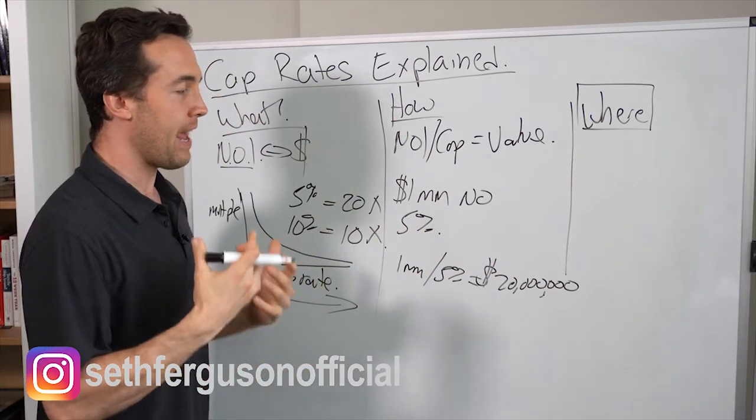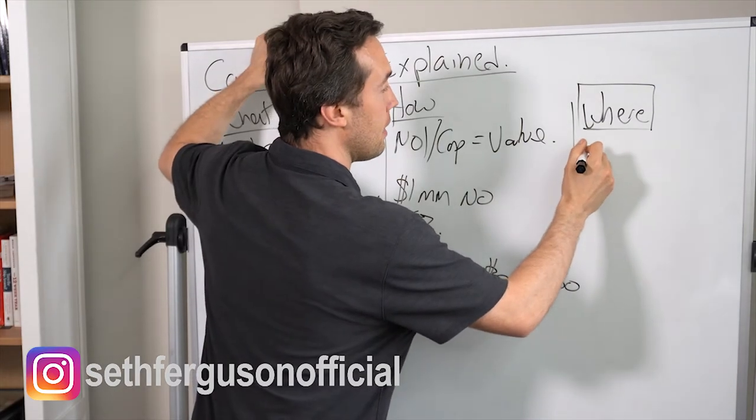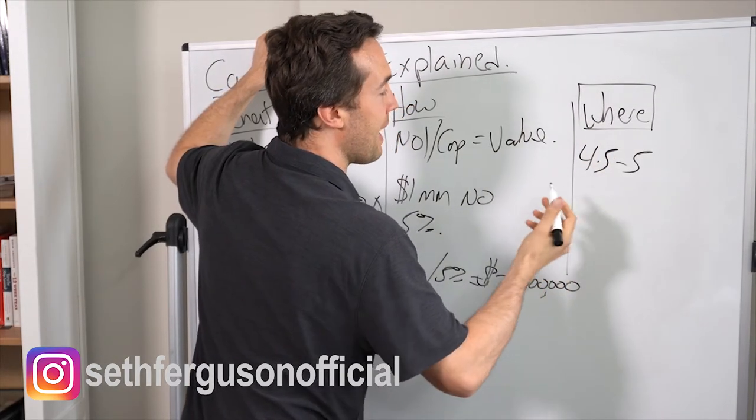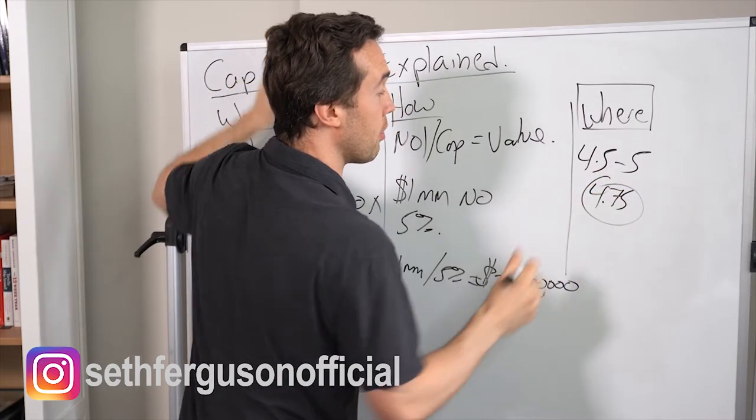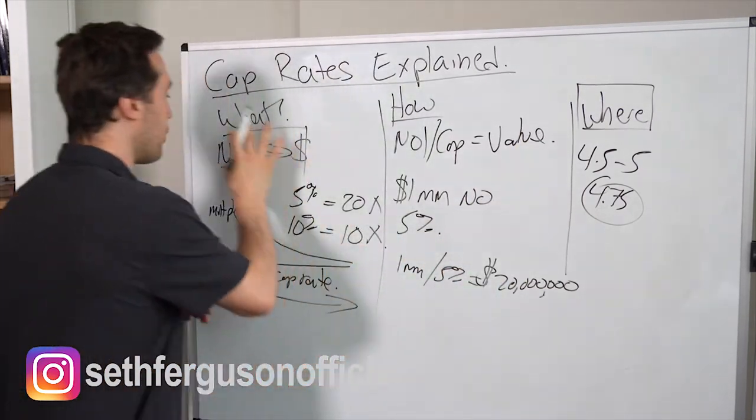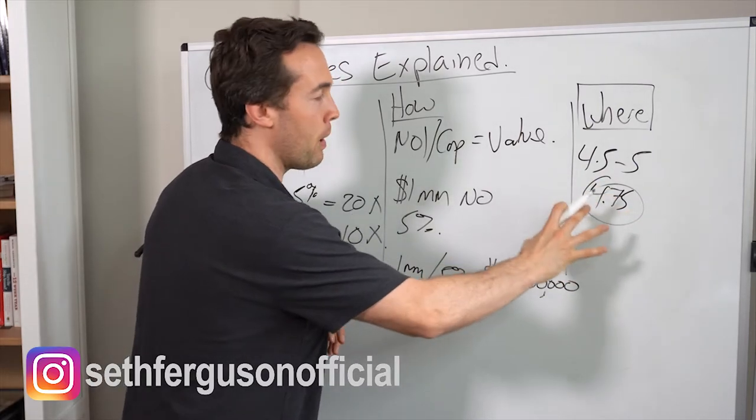So let's say you have a handful of properties and they've all traded between a four and a half cap and a five cap, you may have a market cap of like 4.75, 4.8, somewhere around there. So you know as a buyer that the market is valuing the NOI produced by these properties at a 4.75 thereabouts cap rate.